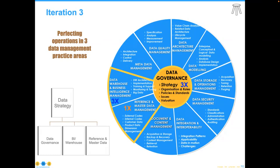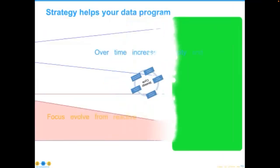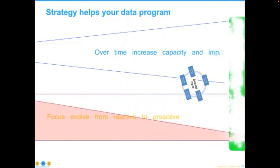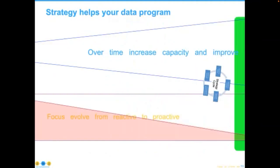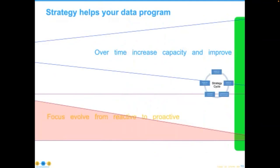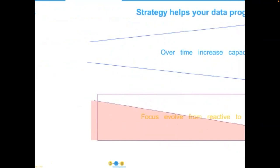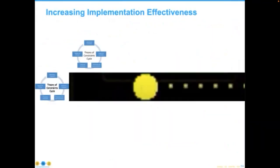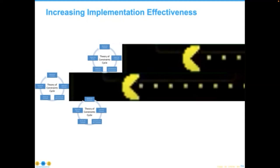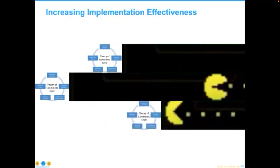This is precisely what I want you to take away: doing these strategic cycles over time increases capacity, improves internal processes, and changes your focus from reactive to proactive. And if you get really good at it, you can parallelize your operations — spin up multiple teams to get started. It's really just up to the organization to understand, achieve, provide, and demonstrate value across all these areas.